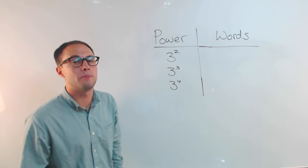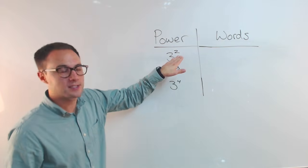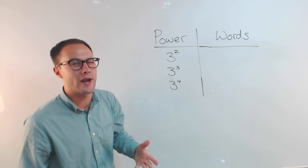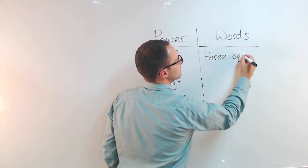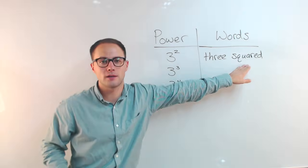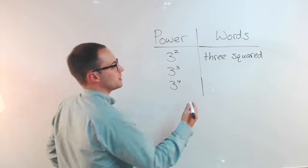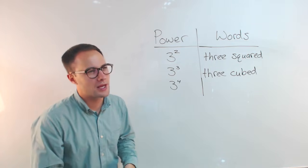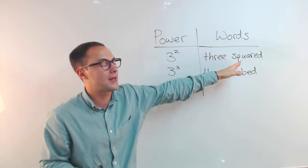Now let's talk about how you would actually read a power. Let's stick with three as the base. So this first one: three is the base, two is the exponent. A two as an exponent has a special word — we say squared. So this we would read as three squared. Anytime you see a two as an exponent you read it as squared. Three is also special — it's called cubed, so this would be three cubed. You can remember that because three dimensions looks like a cube, and a square is two-dimensional.